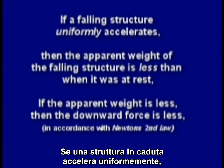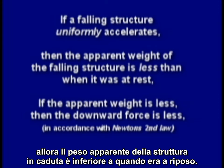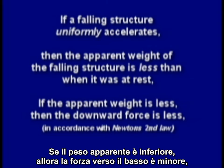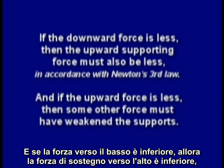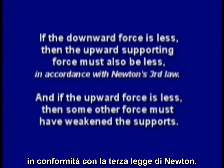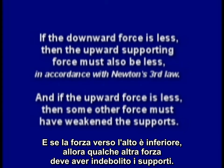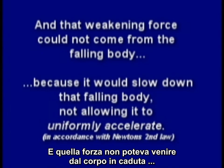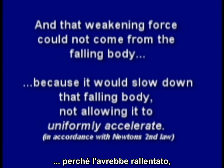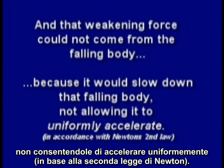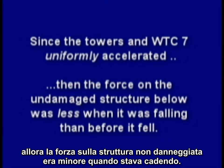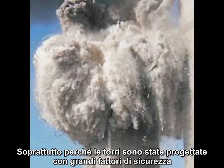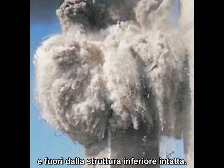If a falling structure uniformly accelerates, then the apparent weight of the falling structure is less than when it was at rest. If the apparent weight is less, then the downward force is less, in accordance with Newton's second law. And if the downward force is less, then the upward supporting force must also be less, in accordance with Newton's third law. And if the upward force is less, then some other force must have weakened the supports — and that weakening force could not come from the falling body, because it would slow down that falling body, not allowing it to uniformly accelerate. Since the towers and World Trade Center 7 uniformly accelerated, the force on the undamaged structure below was less when falling than before it fell — especially since the towers were designed with large safety factors, and much of the structure was blown outside the footprint and away from the lower undamaged structure.